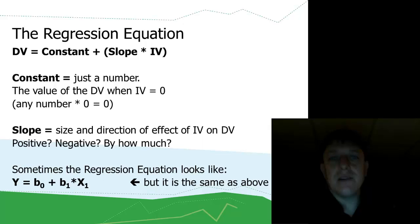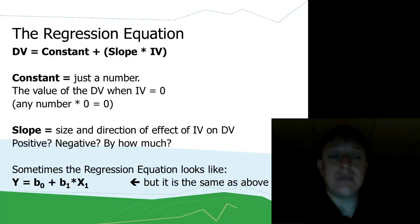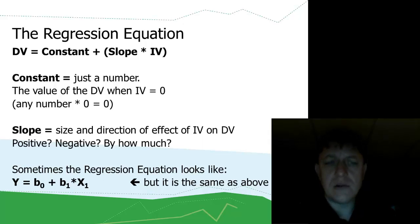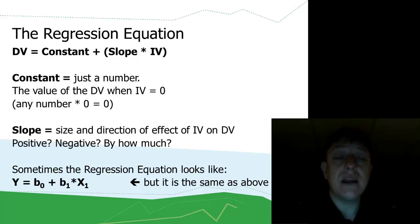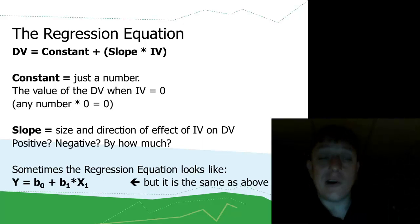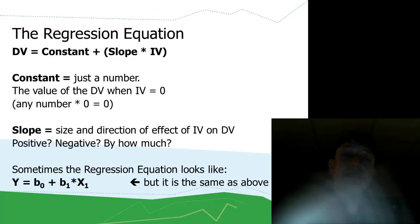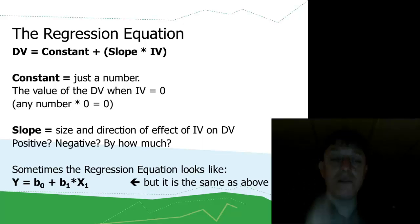Sometimes the regression equation uses different notation. Instead of 'DV' for dependent variable, we write y. Instead of 'constant,' we write b-sub-zero. Instead of 'slope times an independent variable,' the slope is given the notation b1 and the independent variable is x1, for the first independent variable and its associated slope. It looks slightly different but it's the same idea, just with different notation.